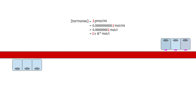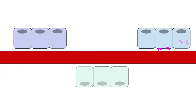Hormone levels can be increased or decreased according to circumstances, and so can levels of receptors on cell membranes, which represents another means of changing hormonal effects. By changing where receptors are found, you can change what tissues respond to a given hormone.